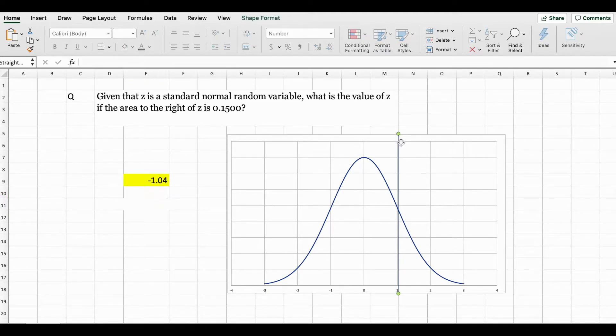What this means is right here 1.04 will be somewhere around here. So the area on the right side of 1.04 should equal to 0.1500.